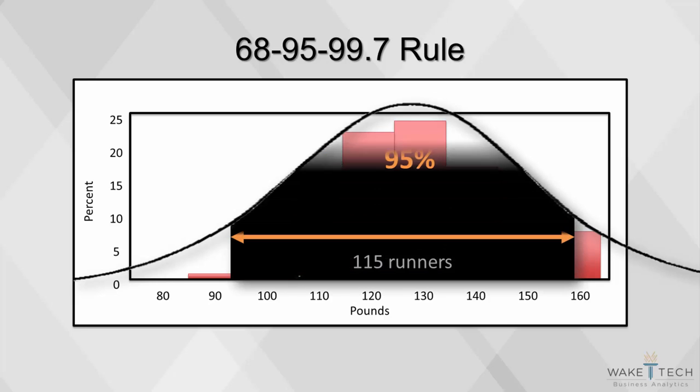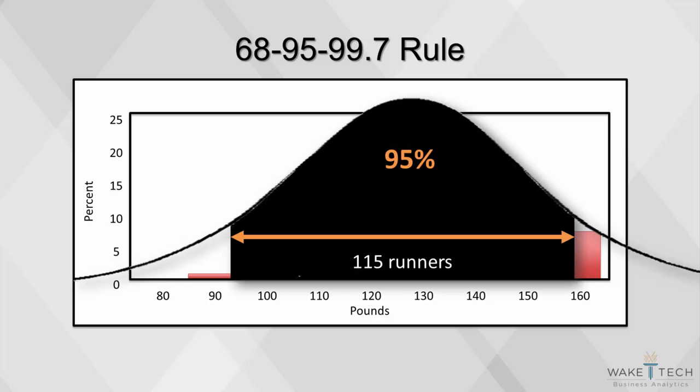Furthermore, 95% of our group, or about 114 runners, should fall within two standard deviations of the mean, or between 96.8 and 158.8 pounds. The data shows that 115 runners fall within two standard deviations of the mean.